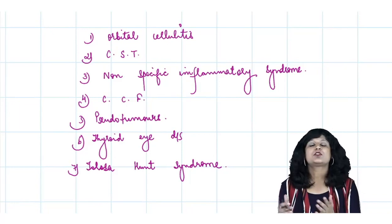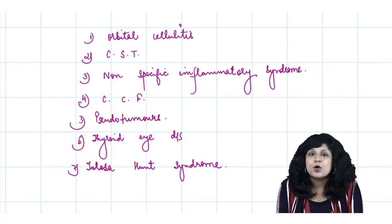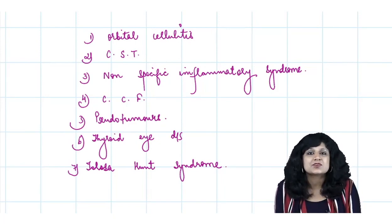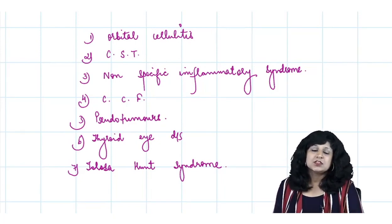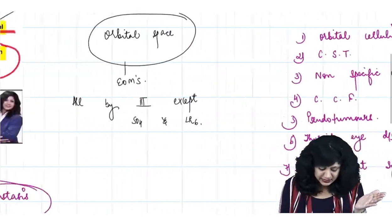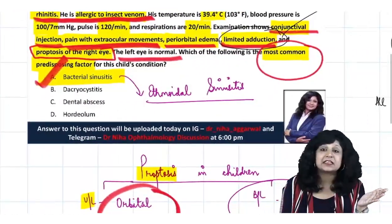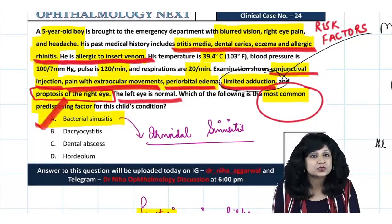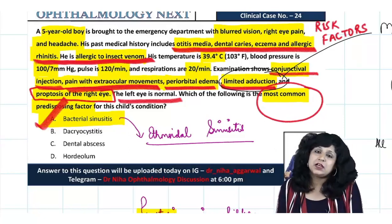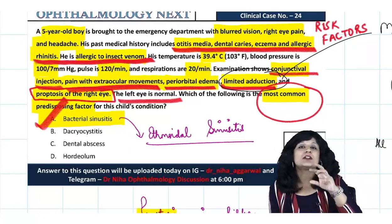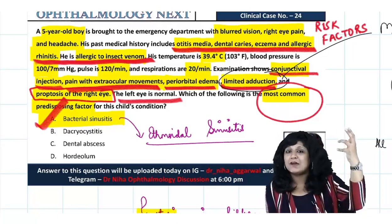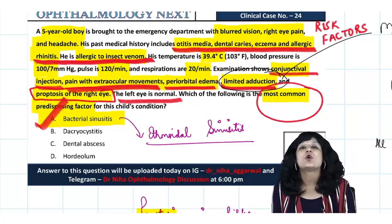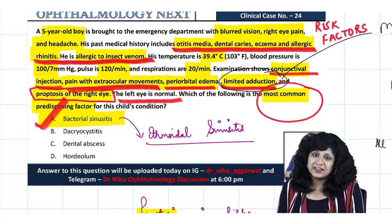Which one to consider and which one not to consider depends upon the age of the patient, the gender, the risk factors, the past history, and the examination findings. I think it is now very clear why we are going with bacterial sinusitis and how we can approach the question with respect to risk factors and differentials. You need to keep these frameworks in mind to start approaching cases on those lines.